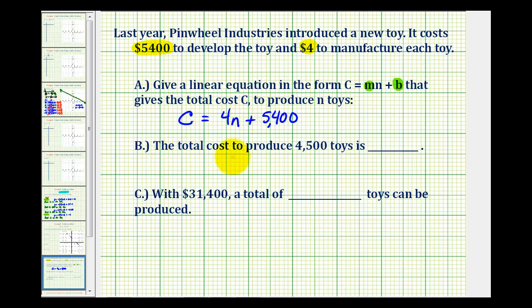For part B, we want to know the total cost to produce 4,500 toys, where in this case, 4,500 would be N, the number of toys produced. So we would have C equals 4 times 4,500 plus 5,400.